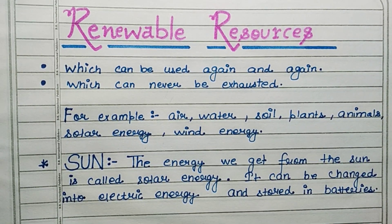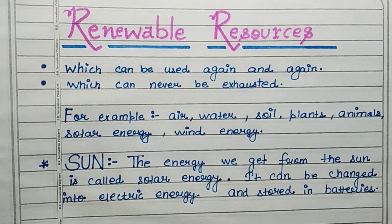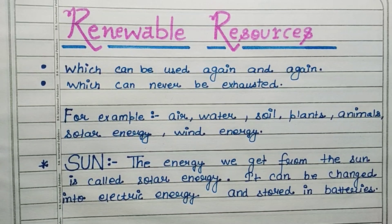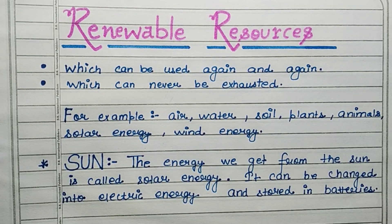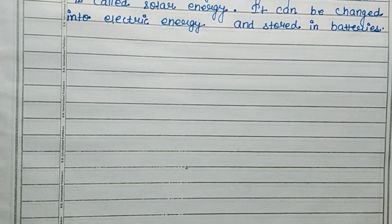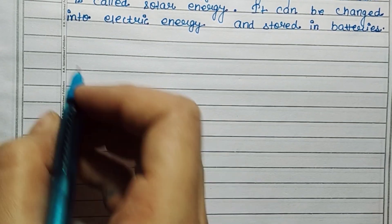The energy we get from the sun is called solar energy. It can be changed into electrical energy and stored in batteries.